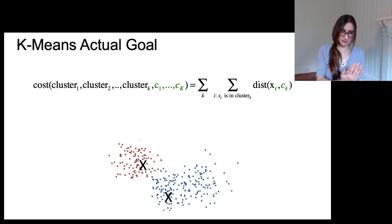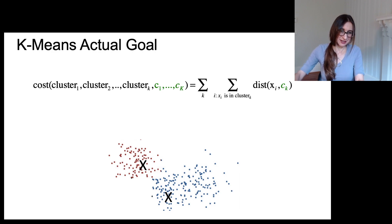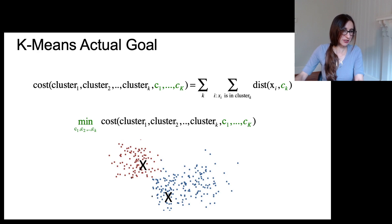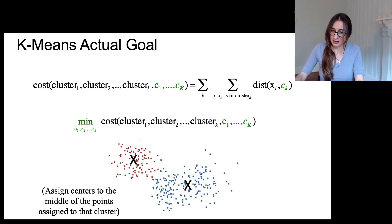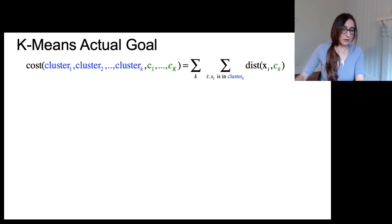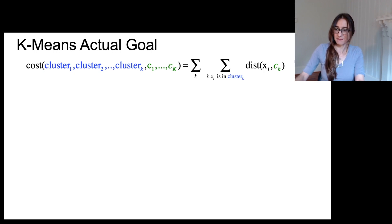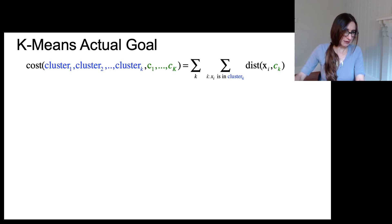Now fixing the cluster assignments and optimizing the cluster centers: the best placement is simply to move the cluster centers to be in the middle of their assigned points. This gives a much better understanding of what k-means is actually doing. The cost depends on both the cluster assignments and the cluster centers.